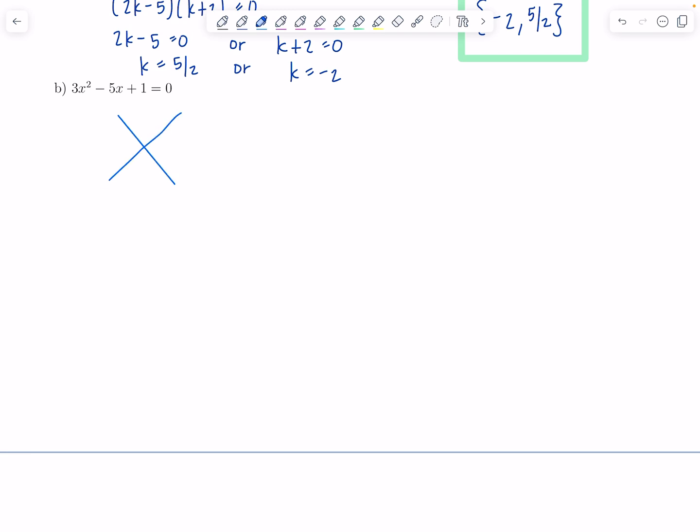3k squared minus 5x plus 1 equals 0. So let's see, can we factor this? Because it's already set equal to 0, so that's good. A times C, that's 3. B is negative 5. Can you think of two numbers that multiply to 3, but add up to negative 5 at the same time? I certainly can't. Because the only factors of 3 are 3 and 1, and no matter how you slice or dice it, that's never going to add up to negative 5. So we can't factor.